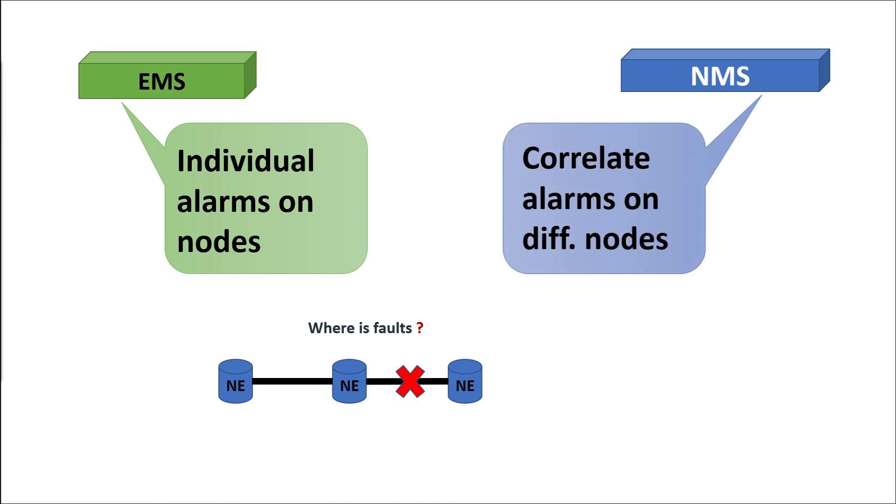NMS can correlate alarms on different nodes, thus finding root cause alarms when a service is disrupted. It can do so because it has a network-wide view and intelligence.